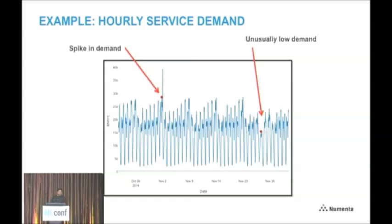Here's a very different example — hourly demand from New York City taxi data, counting how many taxi rides occur every hour. It has a very periodic shape, but there are some anomalies. On the left-hand side, there's a spike in demand that was actually the New York City marathon. On the right-hand side, there's a very different type of anomaly — unusually low demand where the values are completely within range. A threshold wouldn't catch it, and an outlier-based method probably wouldn't catch it either, but it's definitely an anomaly you'd want to know about.